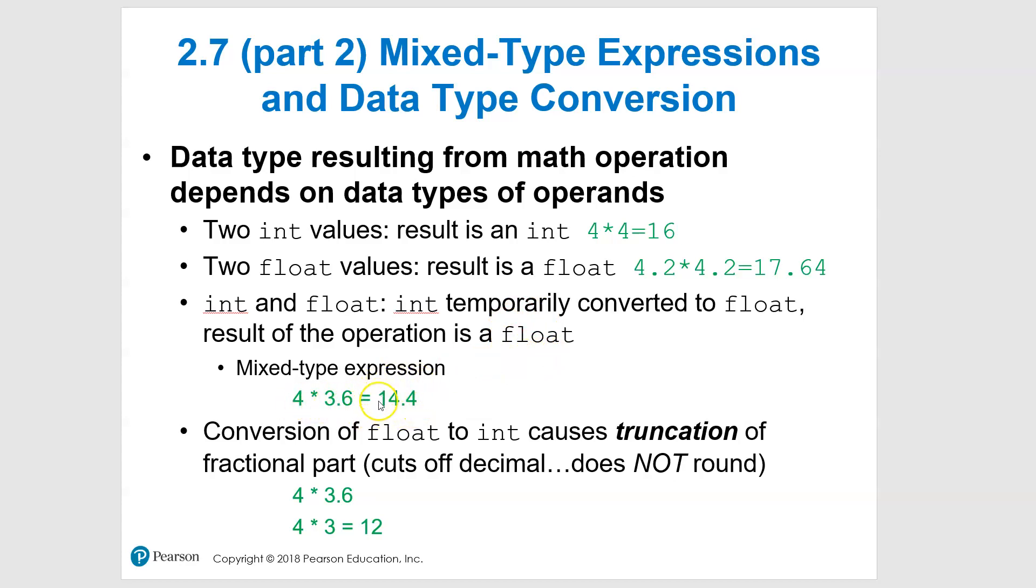So if you take 4 times 3.6, you will get 14.4, so it does give you a float answer, which is very important. If, for example, you come down here on this one and somehow you're using something that converts a float to an int, it will truncate it. So this is what happens: you see something like this, you have 4 times 3.6, it's going to cut off the 0.6, and the computer is going to see 4 times 3, which equals 12.